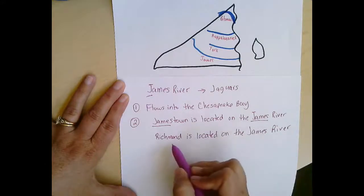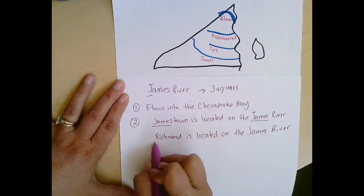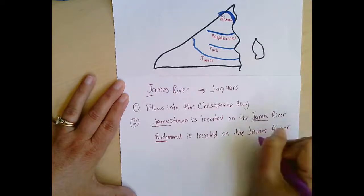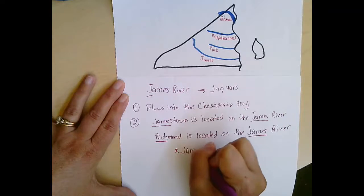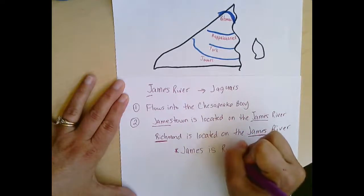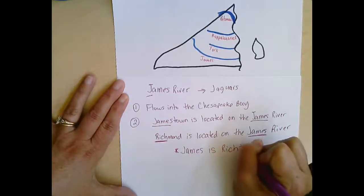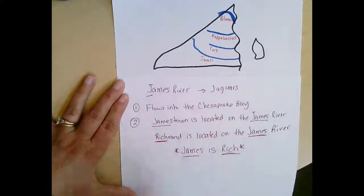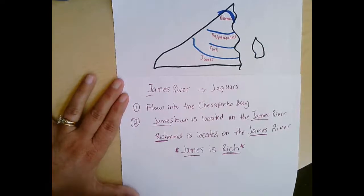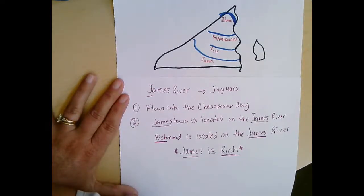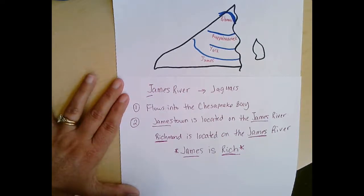The way to remember that Richmond is located on the James River is our silly sentence: 'James is rich' — James for Jamestown, Rich for Richmond. Boys and girls, make sure that you have everything I have on your anchor chart and put it behind your Virginia Studies tab so that you can use it on other assignments.